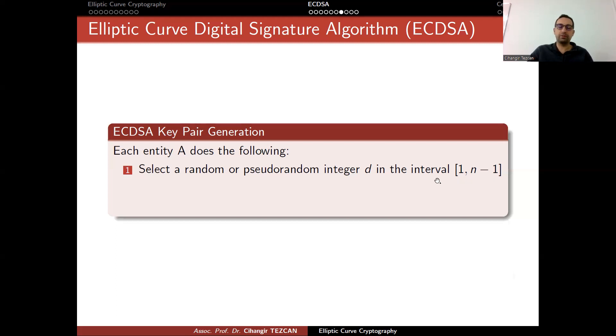You compute d times g, which gives you the point q. Recall that g is our base point, which is defined in the domain parameters. You randomly chose d. You are actually adding g to itself d many times. And this is actually a fast operation. And you obtain a point at the end, q. Q will be your public key. d will be your private key. And it is also written here.